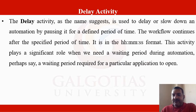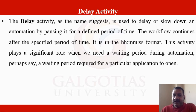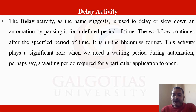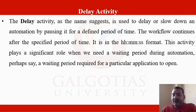Delay activity is used to delay or slow down an automation by pausing it for a specific amount of time. The workflow continues after the specified period. It is in HH:MM:SS format. This activity plays a significant role when a waiting period is needed during automation — for example, waiting for a particular application to open.